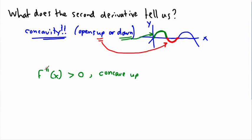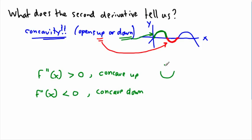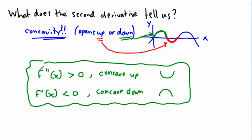So if the second derivative is positive in some region of x values, it's concave up — curving upwards. Conversely, if f double-prime of x is less than zero, the second derivative is negative, and we say it's concave down. Concave up is like a happy face, concave down is like a sad face. You can take the second derivative, see where it's positive and where it's negative, and know exactly how the graph curves. Now let me also remind you about the first derivative.